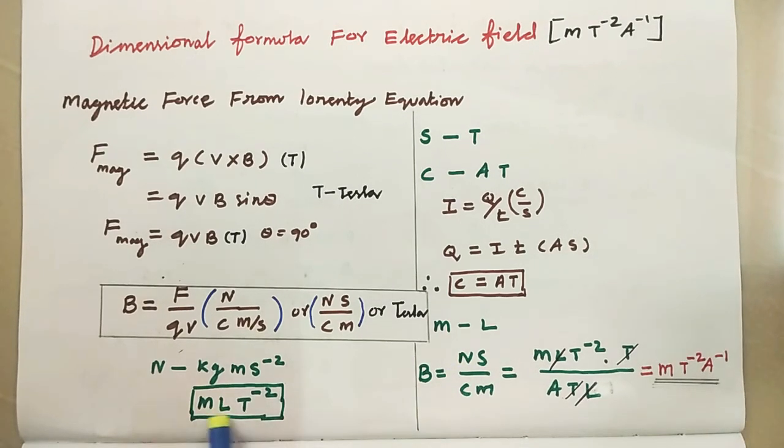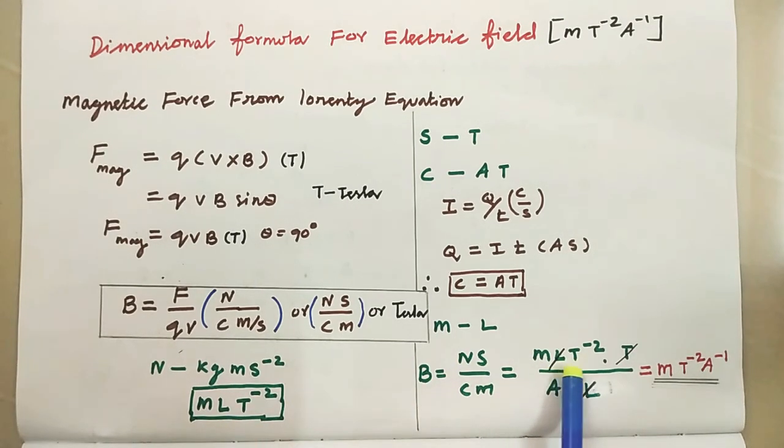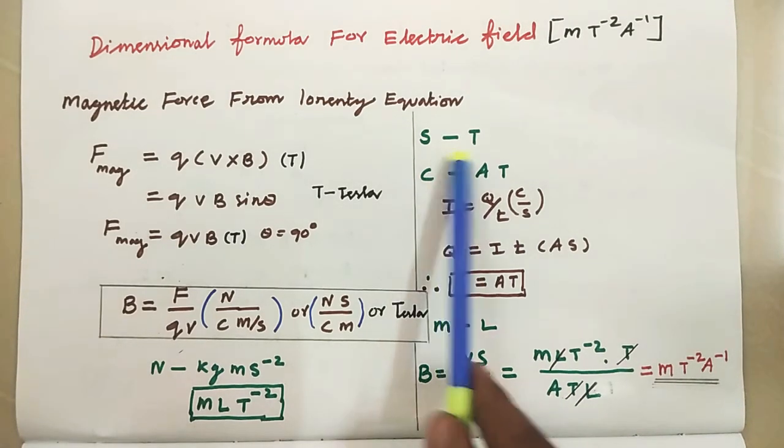Unit of Newton, M, L, T power minus 2. So, M, L, T power minus 2. Second, second is T.